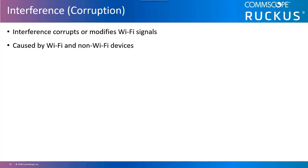Interference in Wi-Fi is anything that corrupts or modifies the original signal. It is usually from sources like non-Wi-Fi transmitters, multipath fading, co-channel, and adjacent channel Wi-Fi devices. Interference may occur between waves of an identical, similar, or harmonically-related frequency, as well as multipath components.